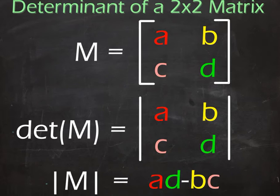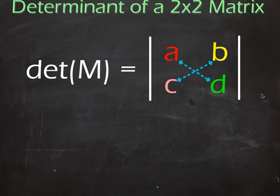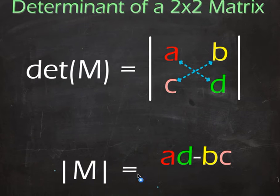You take away the second product. So you do a times d, write it down, find out c times b which is of course the same as b times c, and then you take away the second product. So the determinant of matrix M we write as |M| or det(M) is ad minus bc. It's the first element, the top left diagonal, take away the other diagonal.